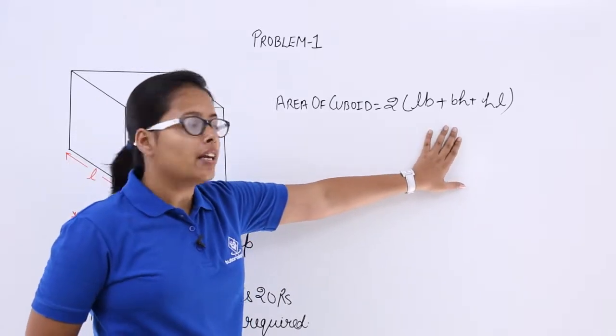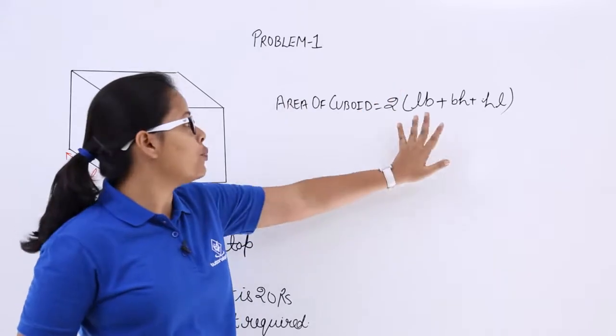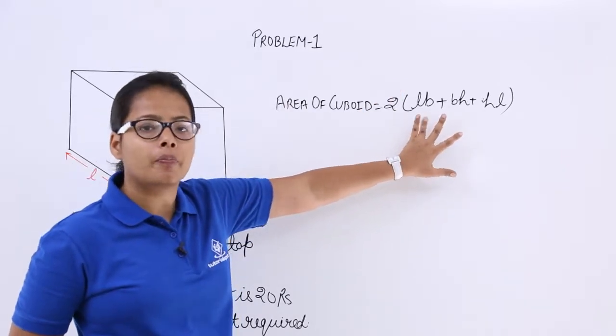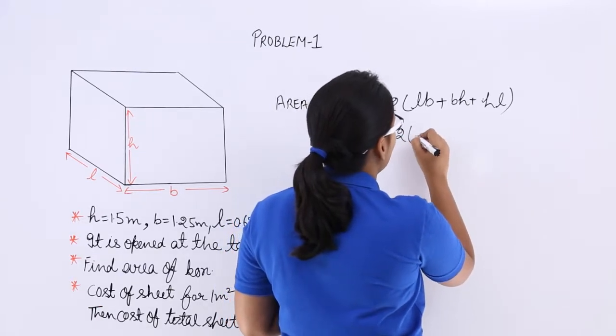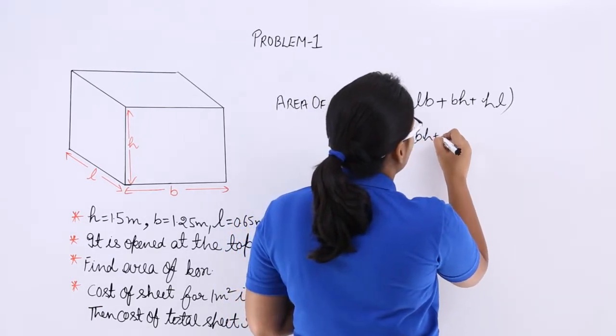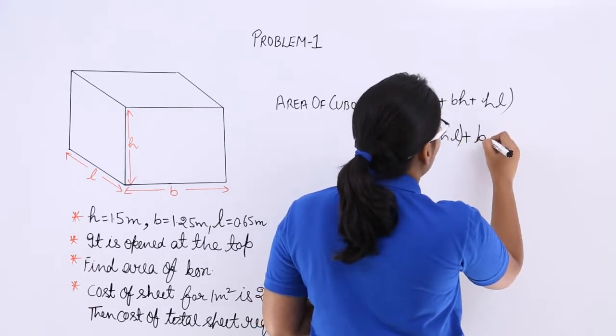Now, here you can see that it has been given to you that it is open at the top which means there is no LB. So, how you can write this? Modify this as twice of B into H plus H into L plus B into L.